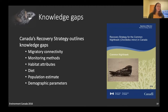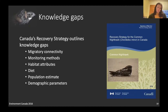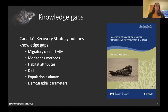The knowledge gaps identified in the 2016 recovery strategy for the common nighthawk were: migratory connectivity, monitoring methods, habitat, diet, population estimates, and demographic parameters such as survival rates, birth rates, and death rates — the basic numbers needed to figure out what's driving population trends.